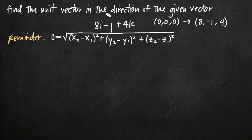Our z value is the coefficient on the k term, which is positive 4. So the expression 8i minus j plus 4k represents the vector with the initial point at the origin and the terminal point at (8, -1, 4). This vector that starts at the origin and goes to this terminal point has a specific length, or magnitude.